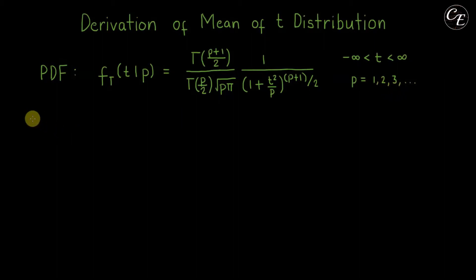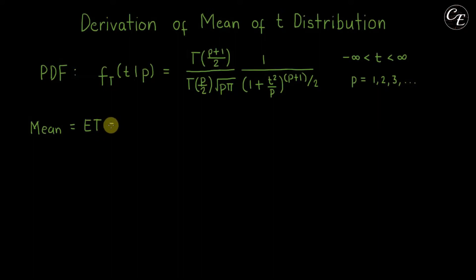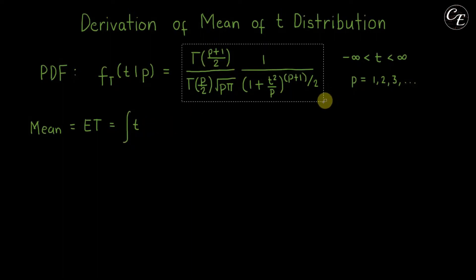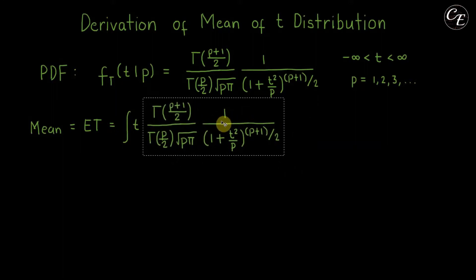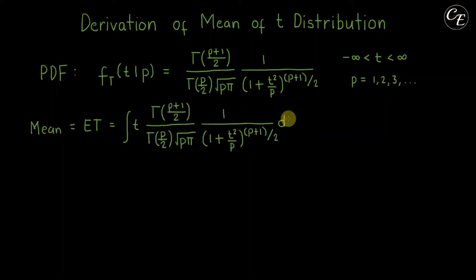For our derivation of the mean, it is equal to the expectation of the random variable t. The expectation of t is equal to the integral of t times the probability density function. This random variable t has a range of values from negative infinity to positive infinity, so the integral runs from negative infinity to positive infinity.